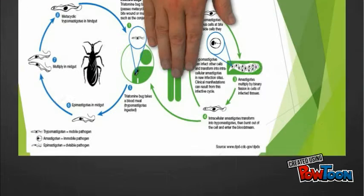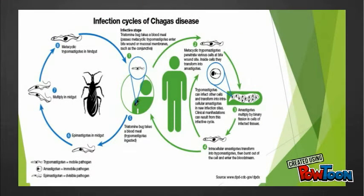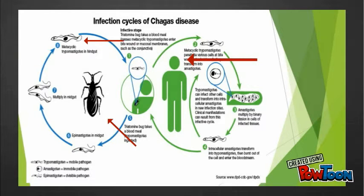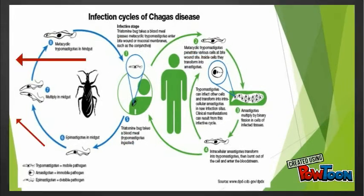This parasite has a life cycle that requires more than one host. In this example there is the initial vector host and then the final host. In the initial host, the parasite takes the form of a trypomastigote form, also called the infectious stage. Inside the final host, it is the amastigote, or growing stage.